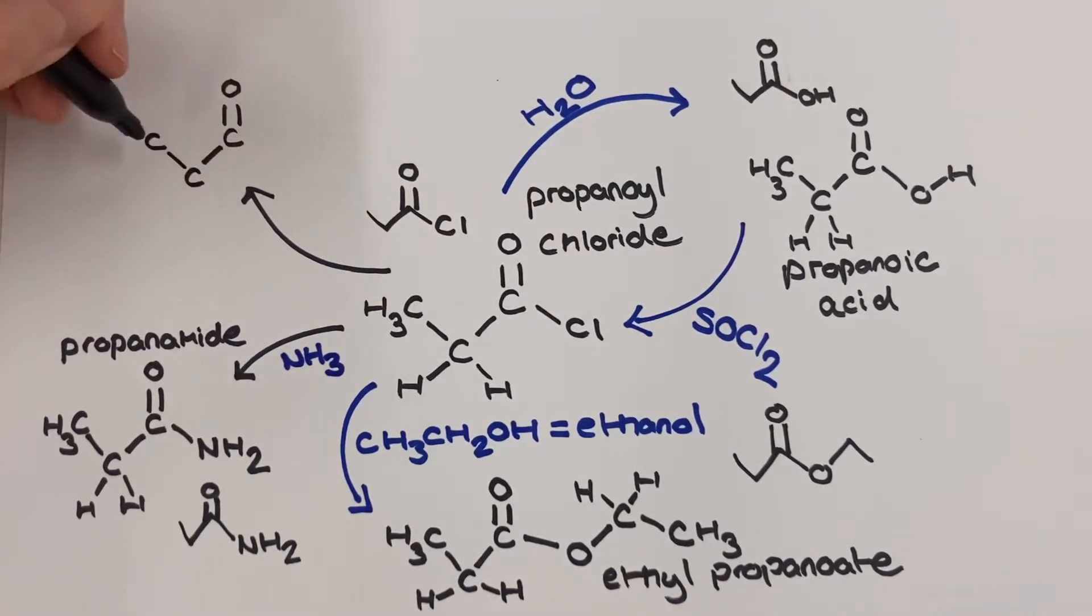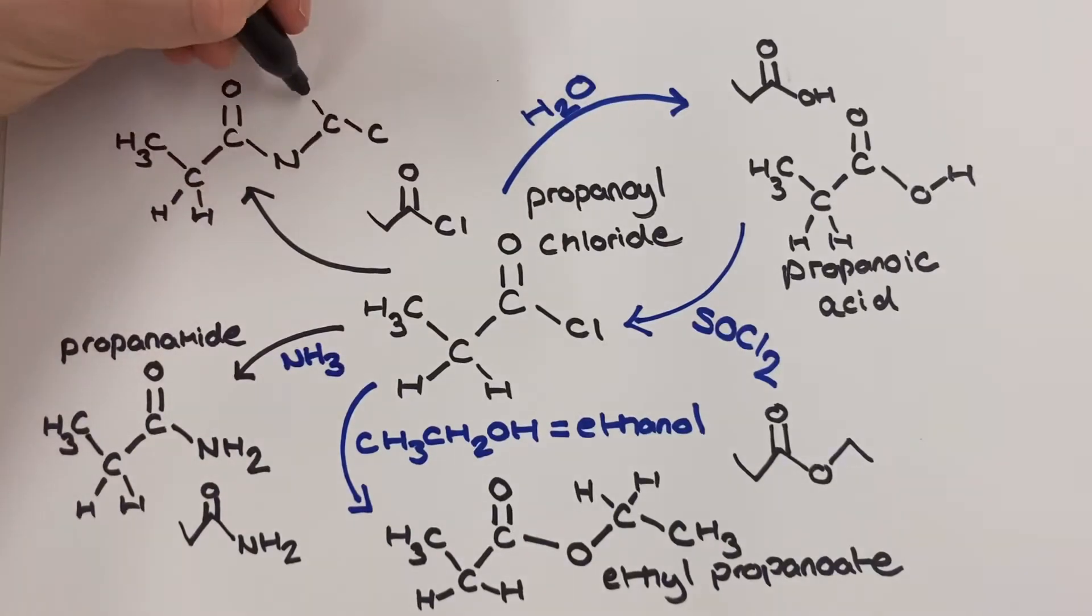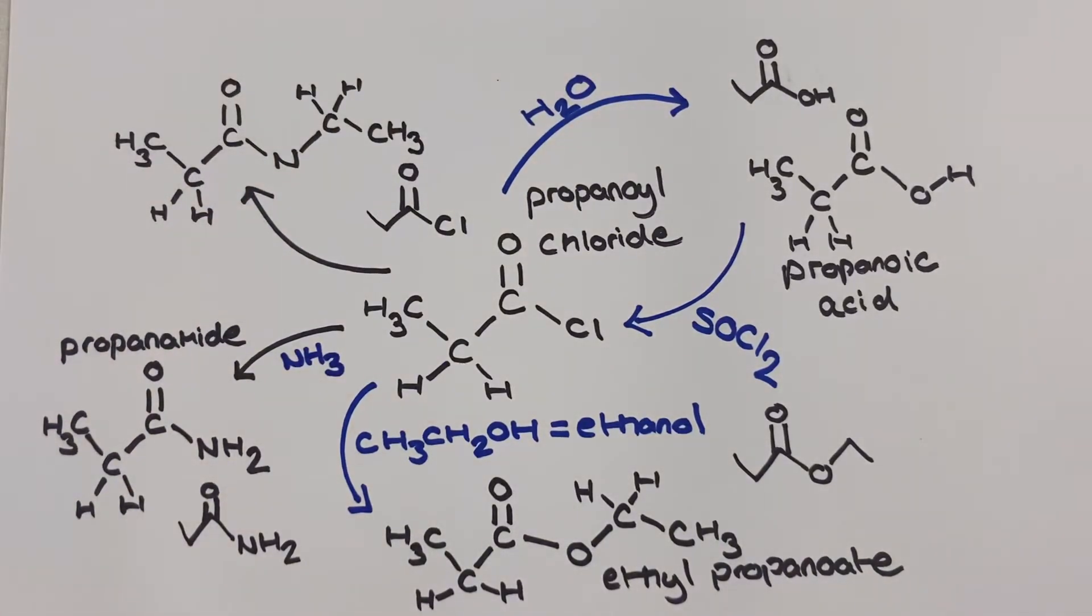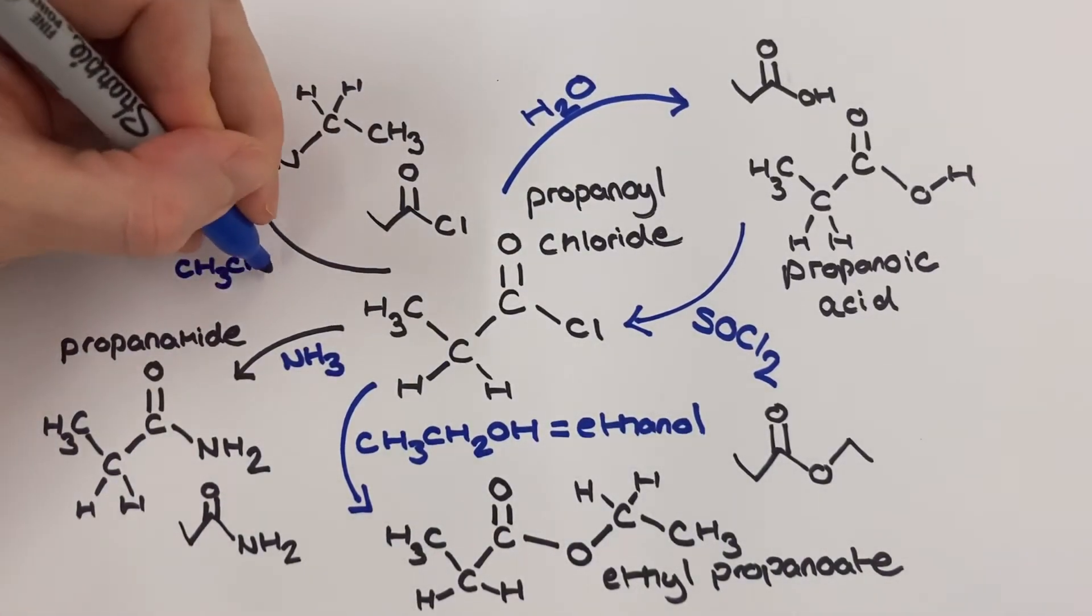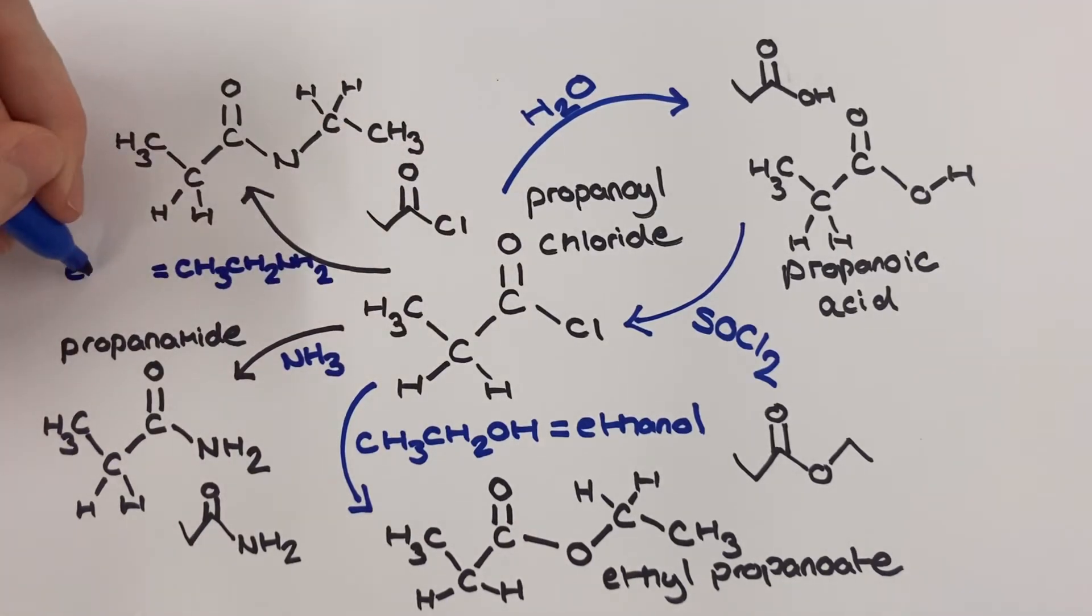This final reaction in our summary is to produce a secondary amide. Now to produce the secondary amide I'm going to take the acyl chloride, our propanoyl chloride, and react it with an amine. The amine I'm using here is ethyl amine.